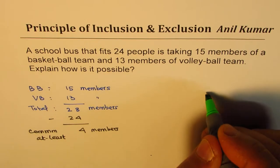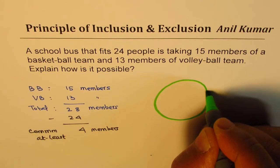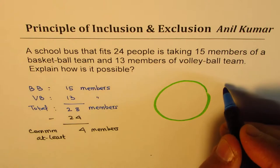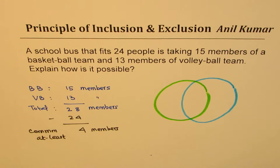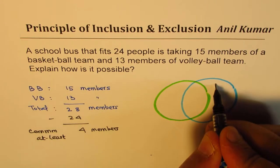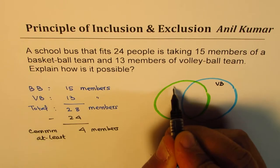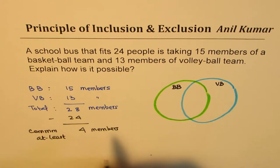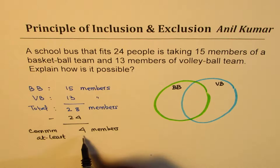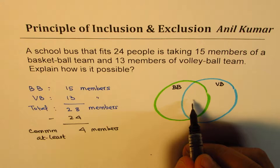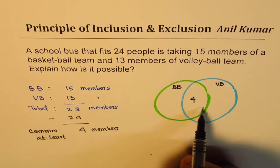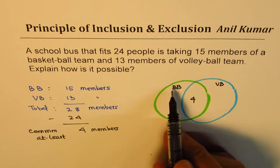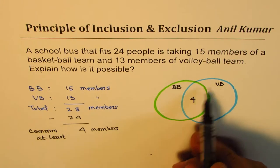There is another way of looking into it and we call it Venn diagrams. You have seen these circles — let me draw two of them. One for the members of the volleyball team, the other for the members of the basketball team. From here we see that there are at least four members which are common. This group is for common members — they belong to both teams. So within this green circle, basketball has four members, volleyball has four members.